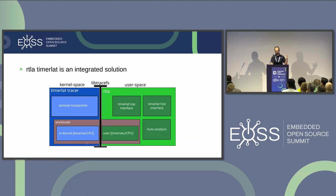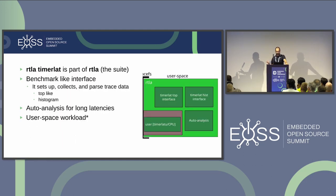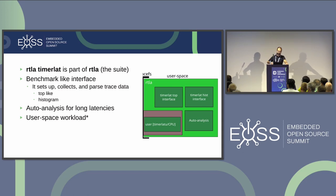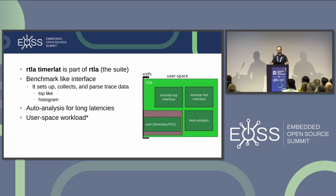I use LibTraceFS to glue the kernel part with a user-space side. This gives us the TimerLat tool, which provides a benchmark-like interface for the tracer and makes it easy to use. It sets up the trace, collects and parses the data, and gives output. It also allows auto-analysis for bad values and gives the possibility of running the workload in user space — something that will hopefully appear in the near future.